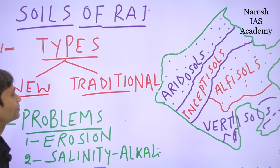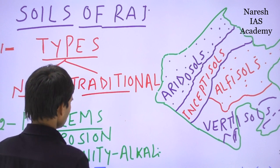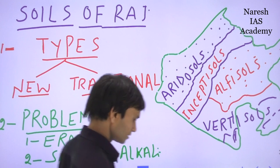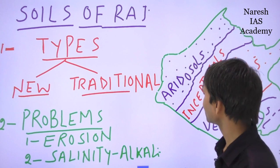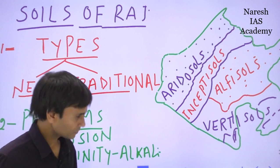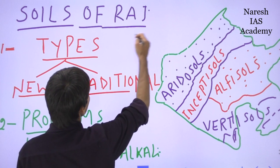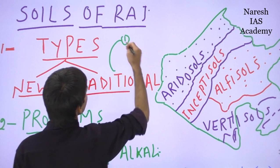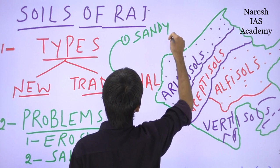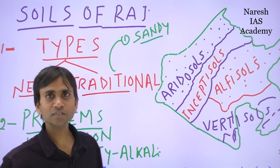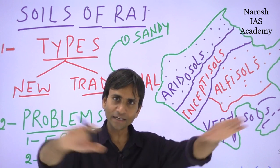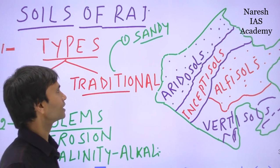Second, the traditional classification of soils in Rajasthan. This traditional classification is prevailing throughout the country, not only in Rajasthan. There are many types in the traditional pattern of soils. One is sandy soil - sandy soil is the largest soil group of Rajasthan because it extends over most of the geographical area of Rajasthan.